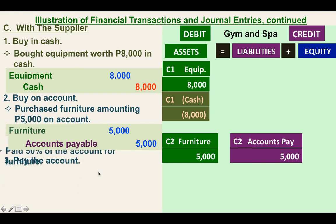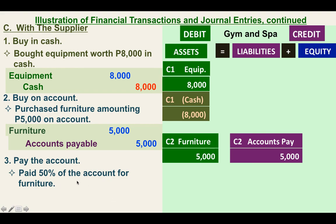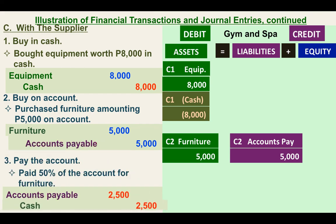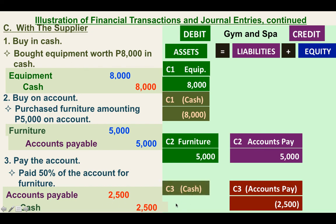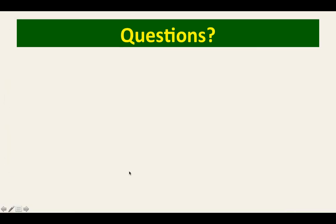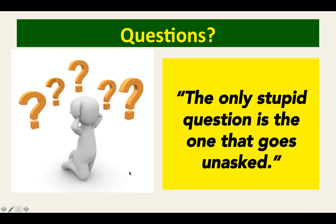The transaction is: paid 50% of the account for furniture. 50% of $5,000 is $2,500. The business receives a reduction of the payable, and the business gives cash as payment. Recording this in the accounting equation: there is a reduction of accounts payable by $2,500 and a reduction of cash by $2,500. That is our illustration of journal entries. If you have questions, please let me know.